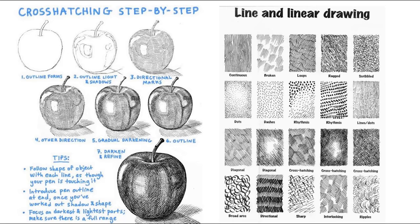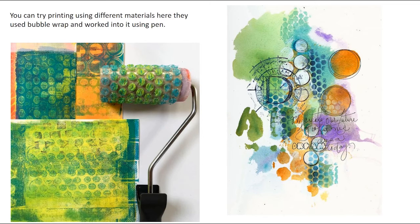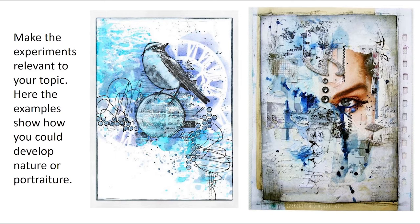Using paint and mixed media, you could have a base background where you've experimented with different materials. In this case they've used bubble wrap with paint and rolled it into the background to create a different tone, then worked into that with pen. You could work into it with pencil or add collage - think about using more than one material. Don't forget to annotate as you go, writing down what you're happy with, what's gone well, and what you would change.